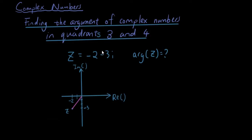And then we move 3 units downwards on the imaginary axis, so 1, 2, 3, moving it down, and we have our complex number located here in quadrant 3. And we want to find the argument of it.